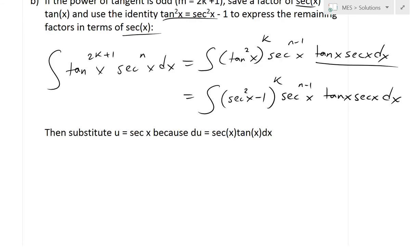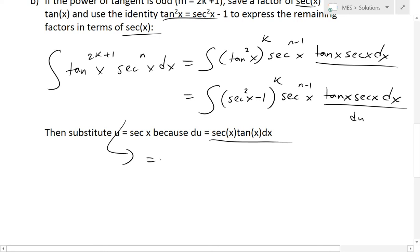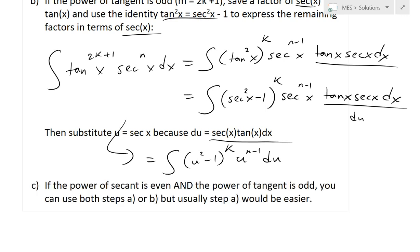Now everything is written in terms of secant squared or secant, except we have the term tan x secant x. We use substitution rule: u = sec x, so the differential du = sec x tan x dx, and this is this entire term. Once we apply substitution, we get (u² - 1)^k times u^(n-1) du, and we can solve this straightforwardly.